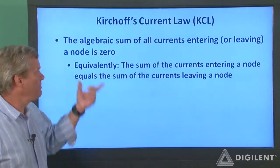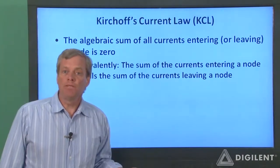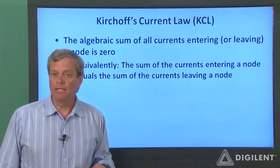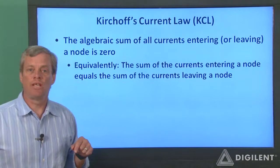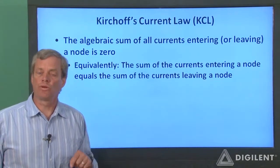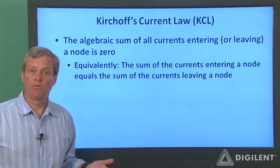Now, notice that in our statement of KCL we use the term algebraic sum. That simply means that we have to account for the sign of the currents when we add them up. Luckily, the sign of the current is associated with the direction we assume for the current rather than the actual current direction. We'll talk more about that later, but first let's take a look at a quick example.